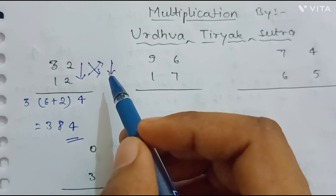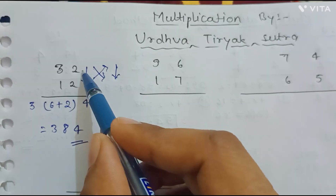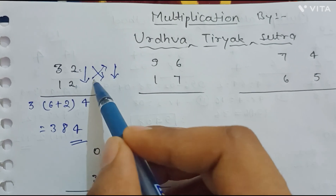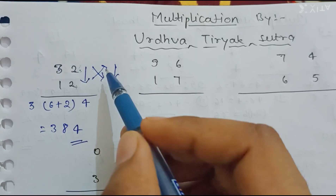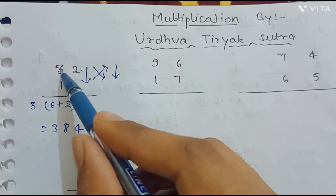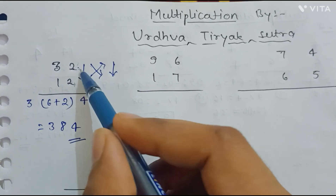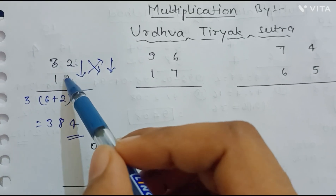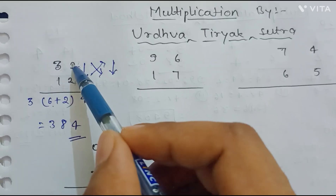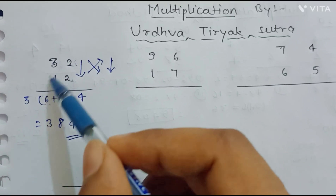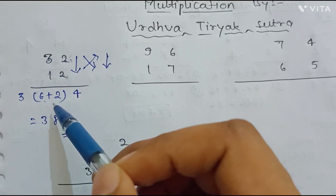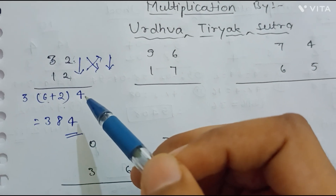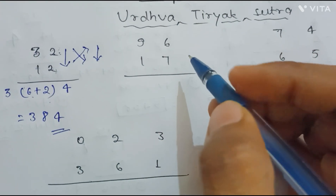This method is sometimes also called the crisscross method. In this, we first multiply both digits vertically, then we apply the cross method — that is 3×2 and 1×2 — and then the third step is to multiply vertically again. So: first 2×2=4, then 3×2=6 plus 2×1=2, giving 8, and finally 3×1=3. So 3, 8, 4 — the answer is 384.